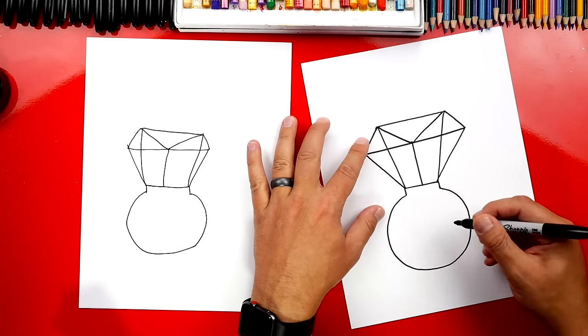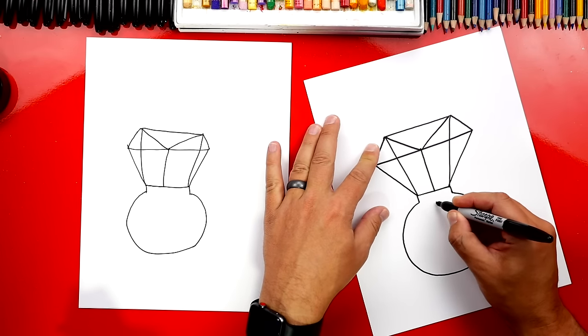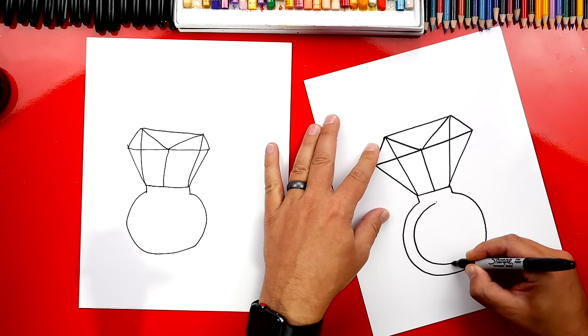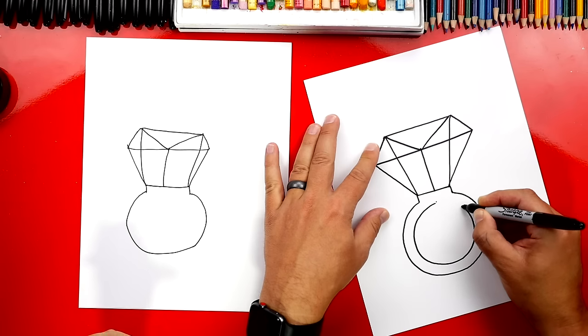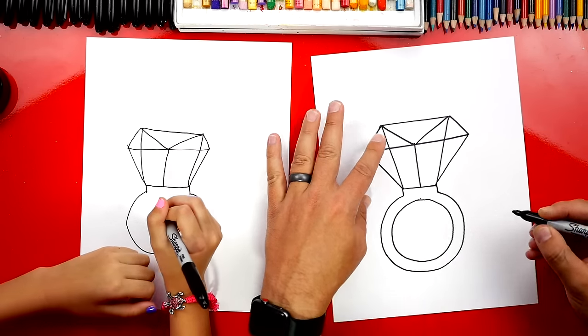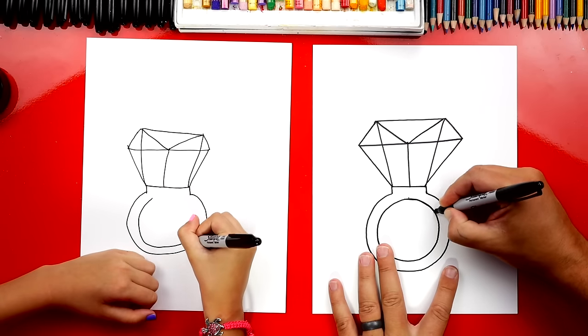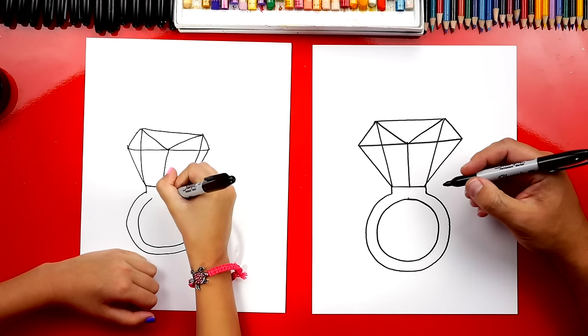Now we're going to draw the inside of our ring. We're going to draw another circle. We're going to start right here and go around. We're going to match the same circle, but smaller, around like this. And then this time we're going to connect at the top. Keep going all the way around and connect.